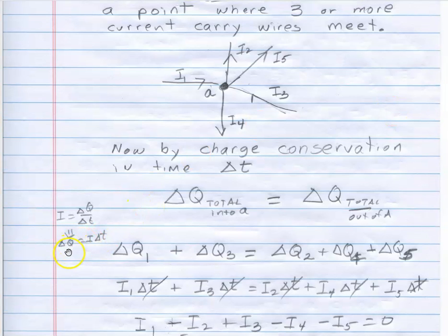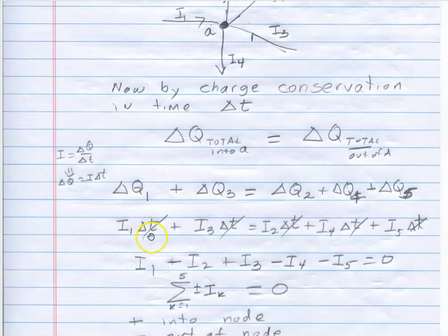And then I use this to convert those in terms of currents. I1 delta t is delta q 1. I3 delta t is delta q 3. I2 delta t is delta q 2. I4 delta t, I5 delta t is q 5. And it's the same interval of time, so I can divide that out all the way across.